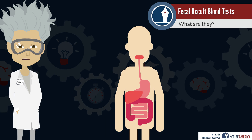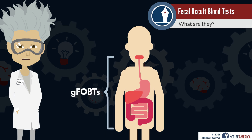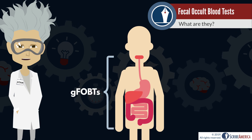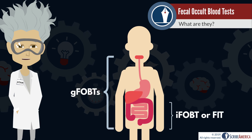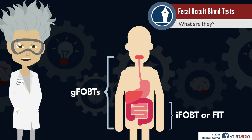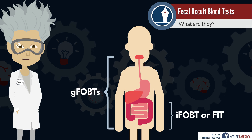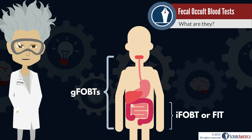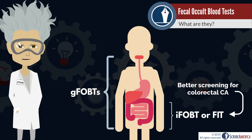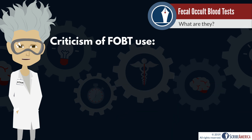Another key difference between the two FOBT types is that GUIAC-based testing is capable of detecting a bleed from any region of the GI tract, while immunochemical-based testing primarily detects bleeding within the lower GI tract. The fact that this test is less likely to react with blood from the upper GI limits its ability to detect blood from sources like a peptic ulcer, but provides an advantage when screening for colorectal cancer.